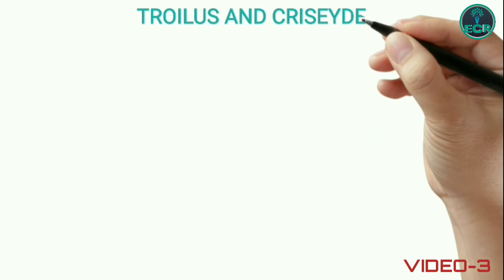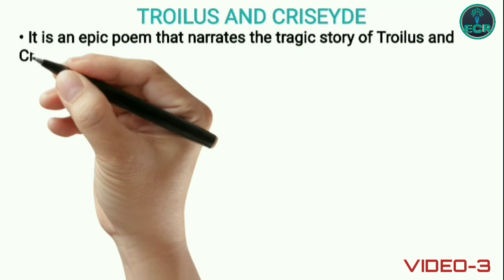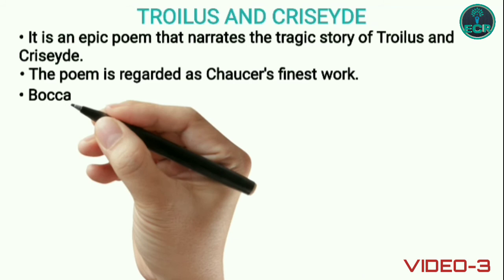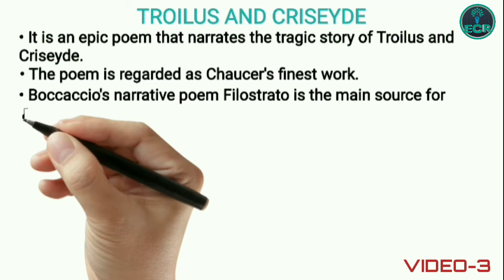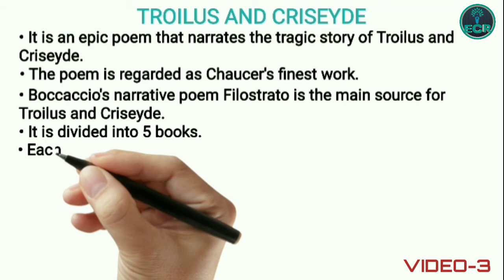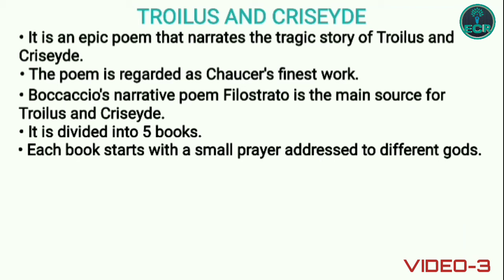Next is Troilus and Criseyde. It is an epic poem that narrates the tragic story of Troilus and Cressida. The poem is regarded as Chaucer's finest work. Boccaccio's narrative poem Filostrato is the main source for Troilus and Criseyde. It is divided into five books. Each book starts with a small prayer addressed to different gods.